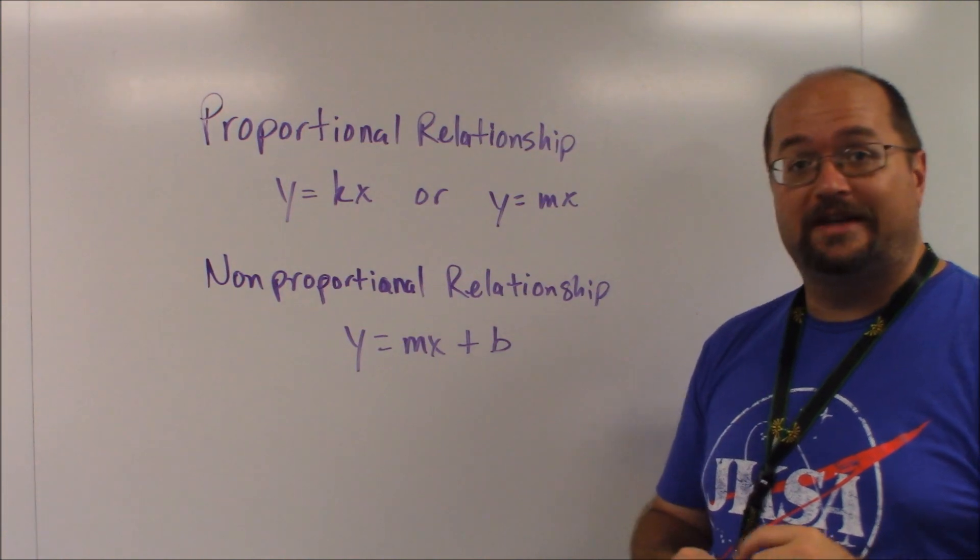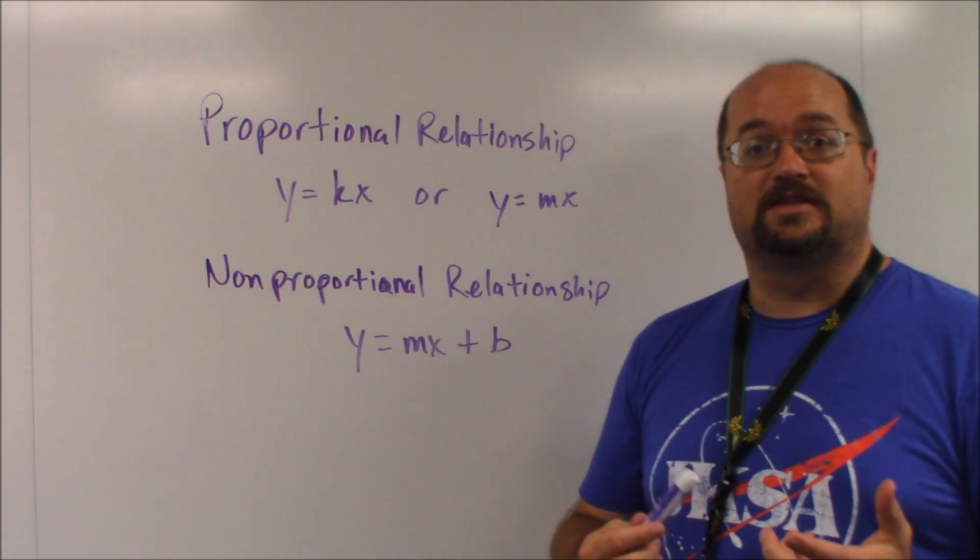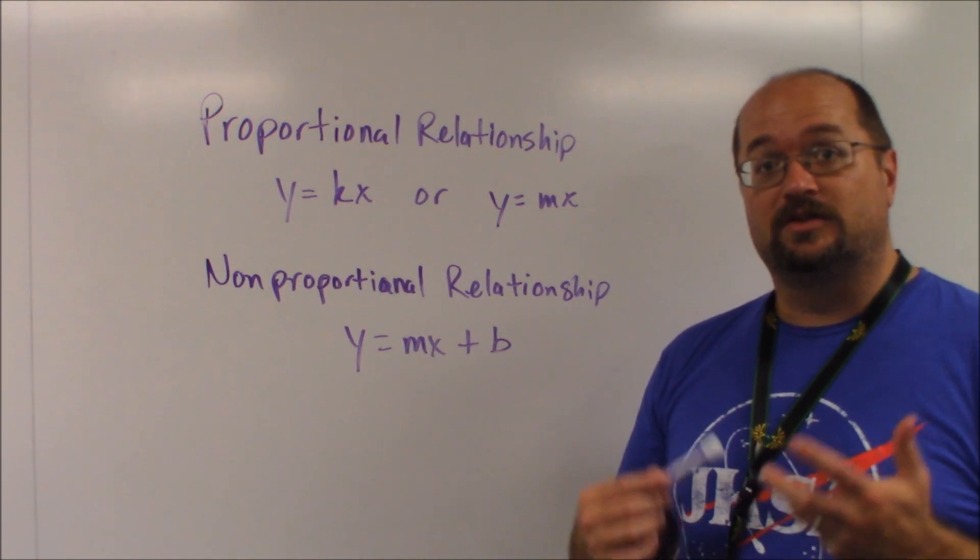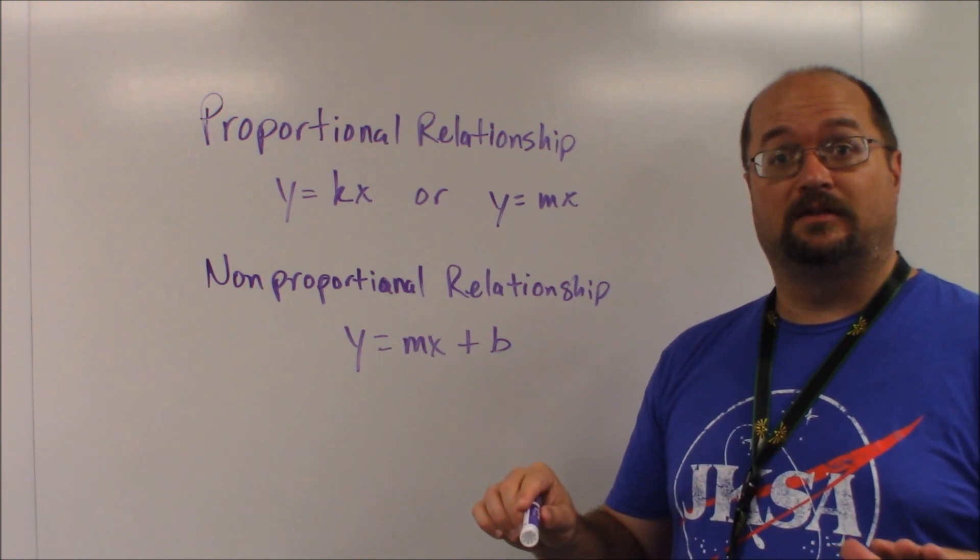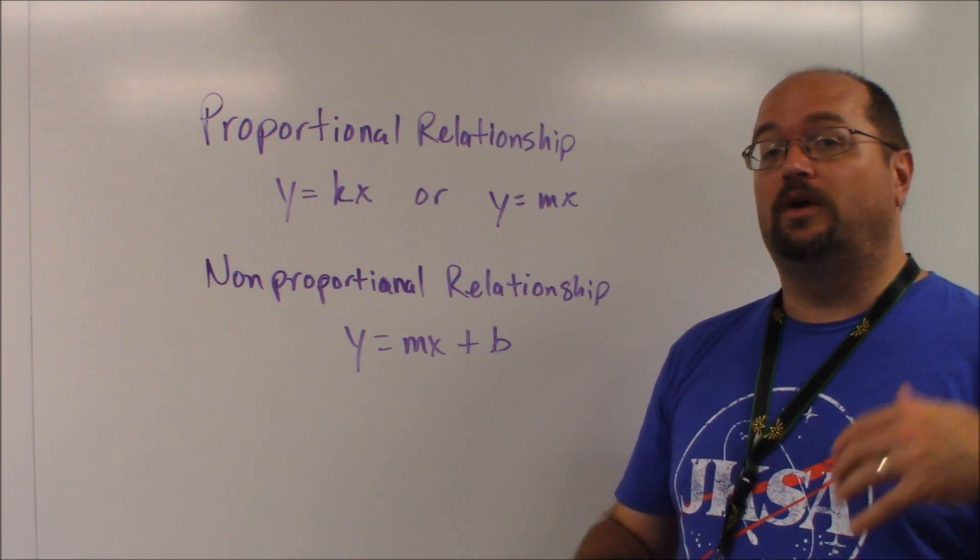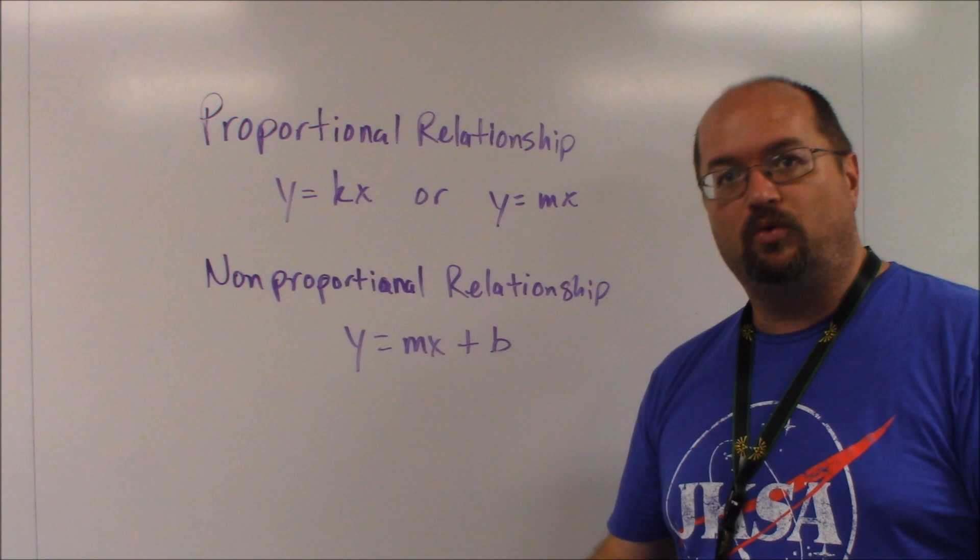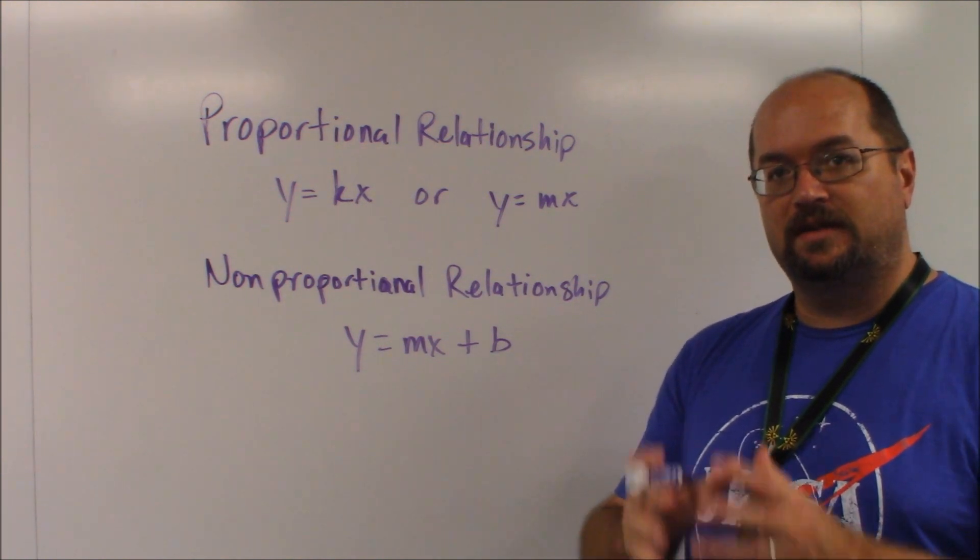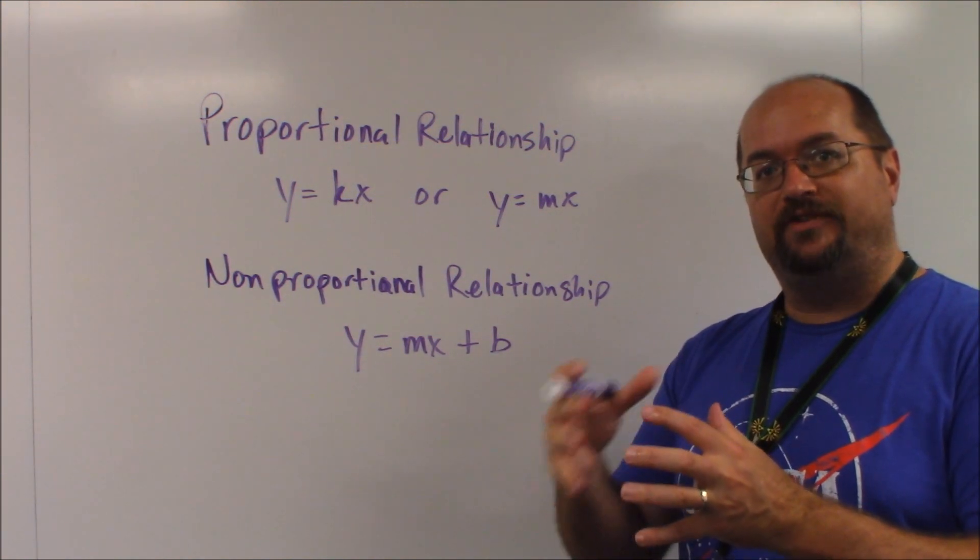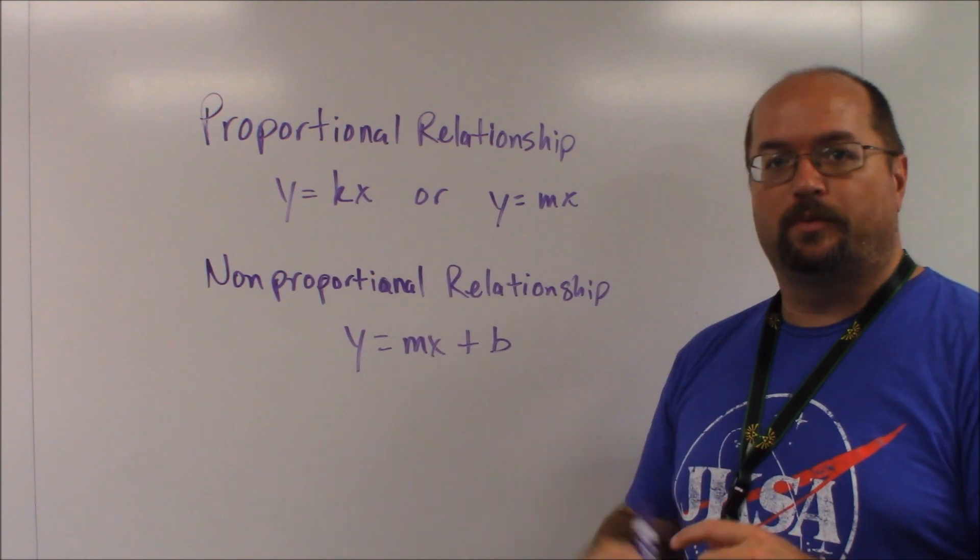So our answer for the first one is C, the concert tickets because they are $60 per ticket. That's it. No added fee, no starting point, none of that. Just, here's what it is at this rate, that's a proportional relationship.